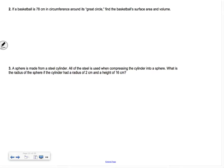Number two says if a basketball is 78 centimeters in circumference around its great circle, we have a sphere going around here with circumference of 78. We know 2πr = 78. Our radius is 78/2π, which reduces to 39/π. That's the radius. You could find a decimal approximation or keep it like that.